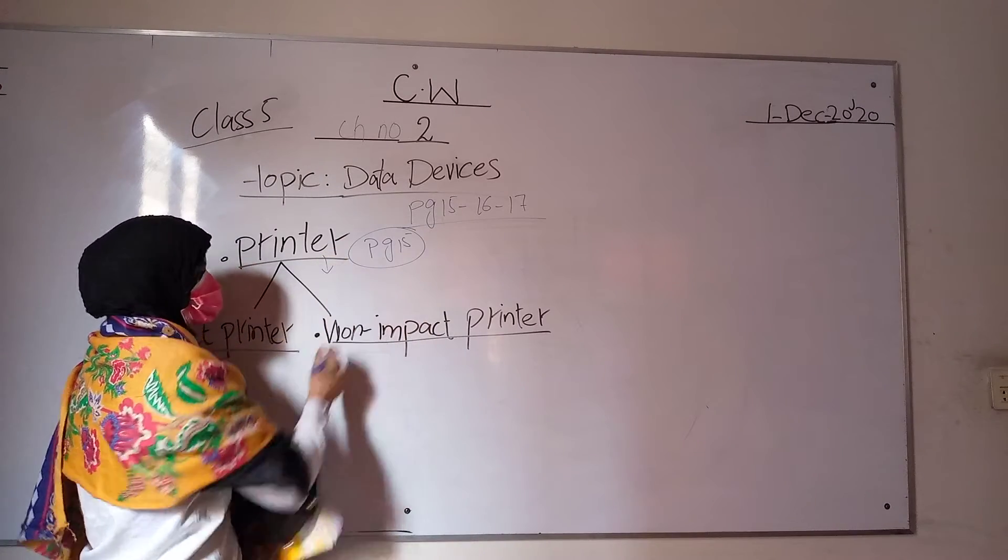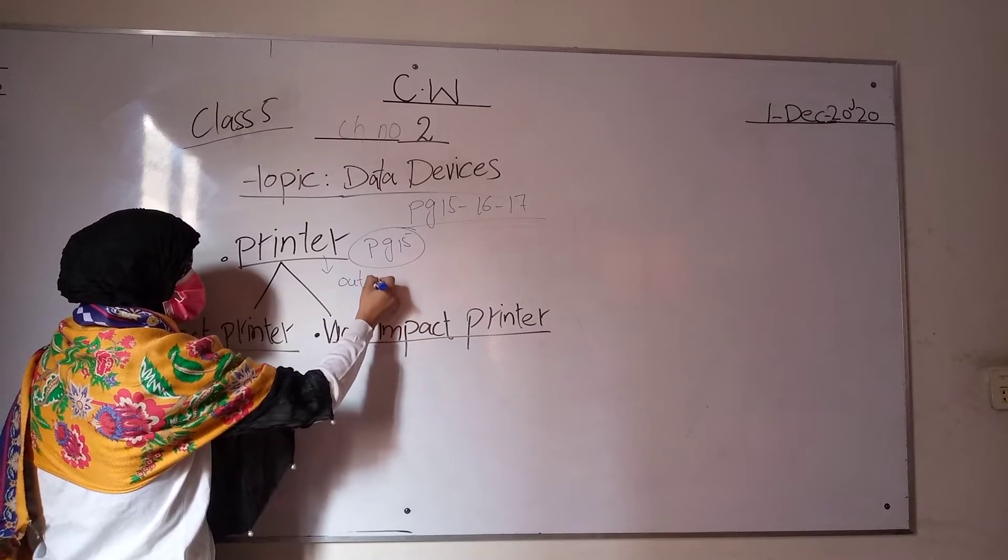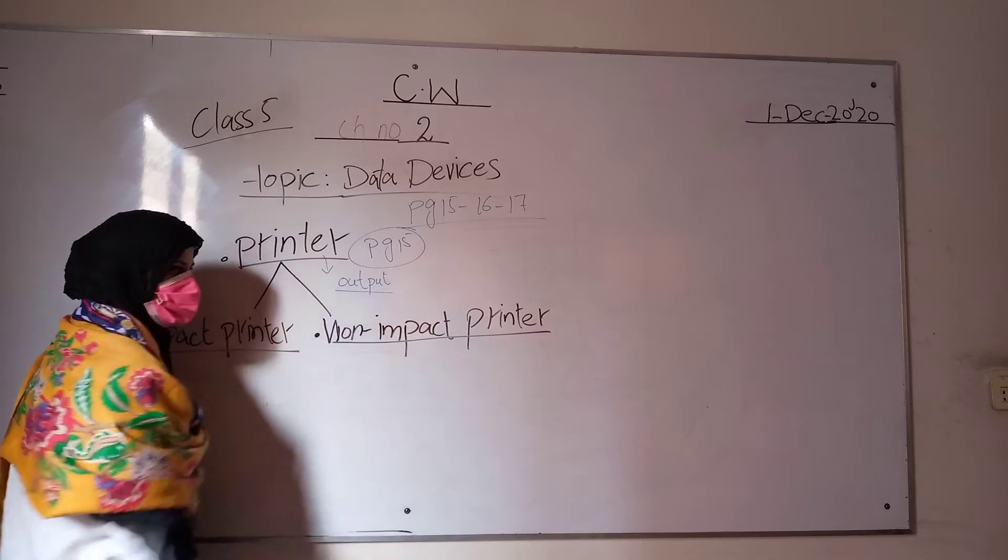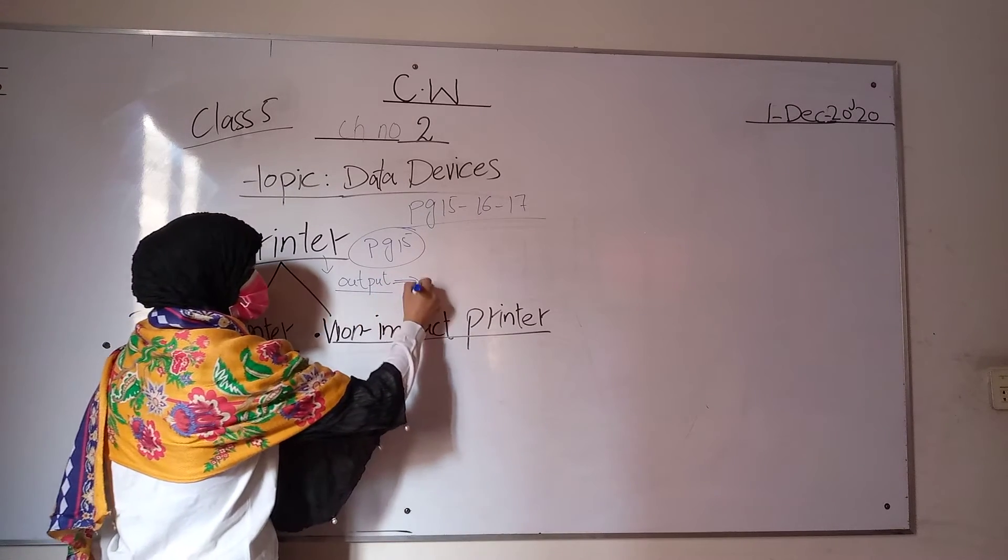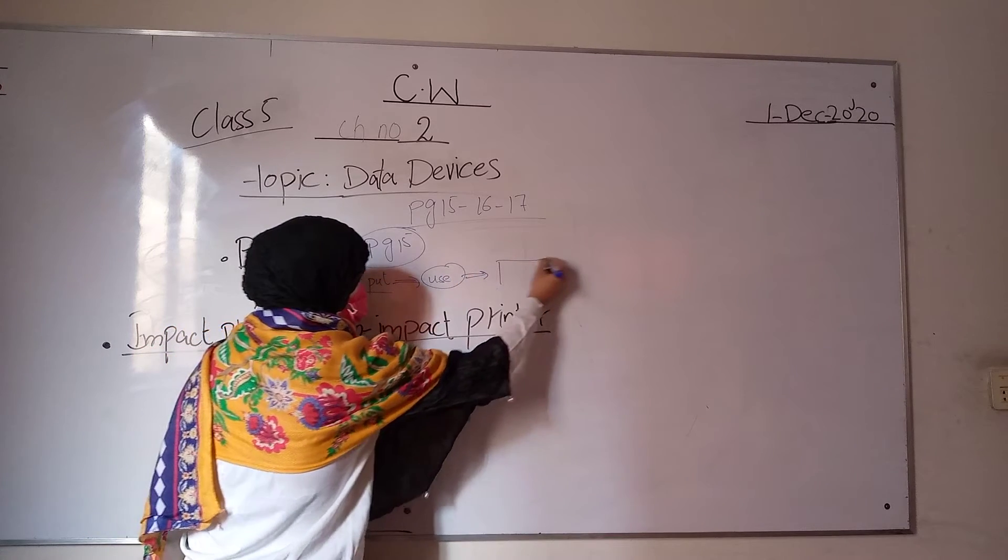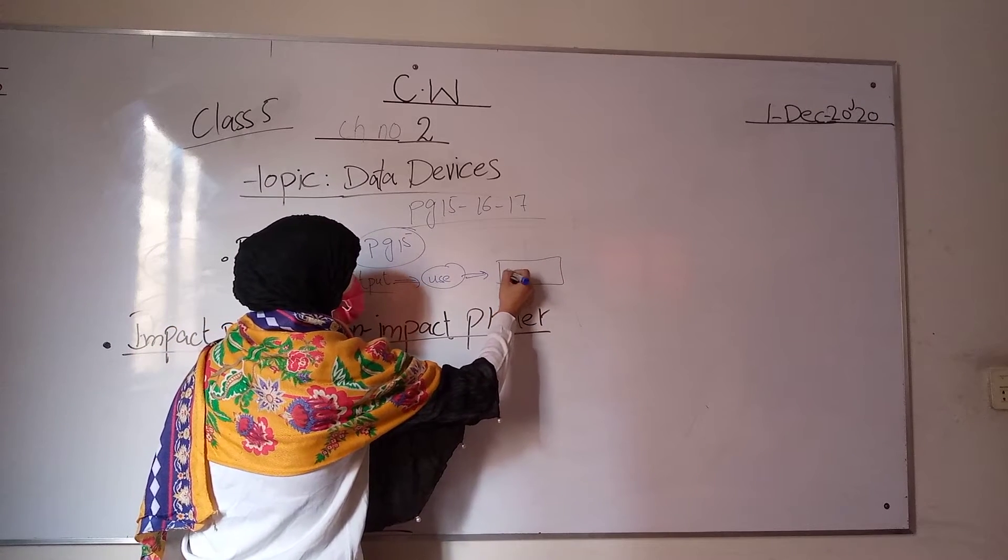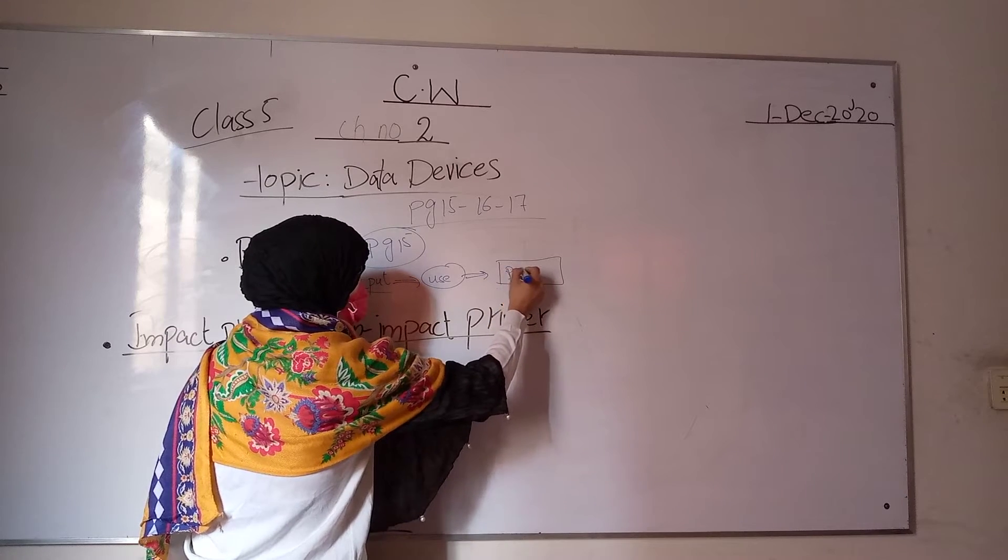Printer. First of all, you should understand that a printer is an output device, and its use is to print on paper.